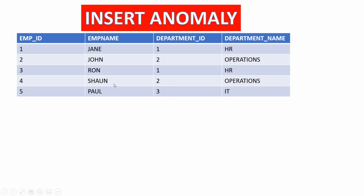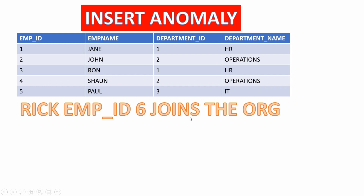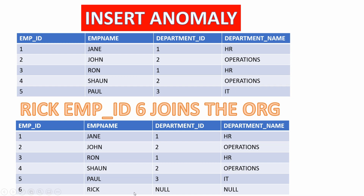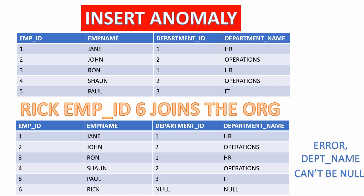Let's talk about insert anomaly with the same table. A new employee Rick joins the organization, but he has not been assigned a department just yet. So we would try to insert employee ID 6, name Rick, and the other two fields will be null. Now if the table has a check constraint checking that the department name cannot be null, we will get an error and this is referred to as insertion anomaly. There are different ways to tackle such situations in a denormalized database — we can either insert 'not assigned yet' or park this row and insert it later when a department has been assigned to Rick.